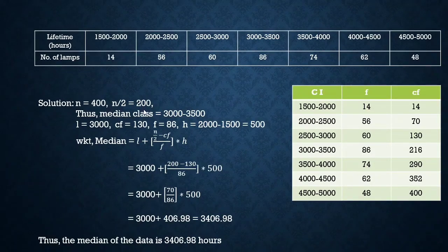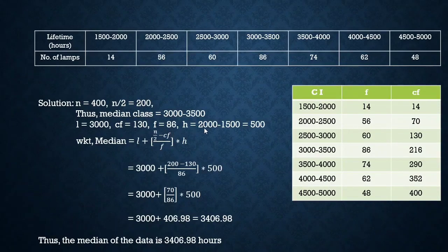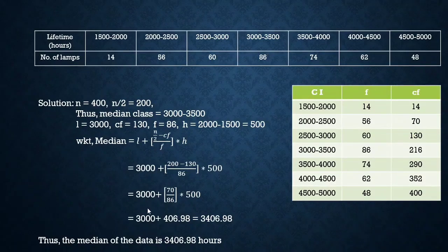For median class 3000–3500: l = 3000, cf of preceding class = 130, f = 86, h = 500. Substituting: Median = 3000 + (200−130)/86 × 500 = 3406.98 hours. So the median lifetime of the neon lamps is approximately 3406.98 hours.